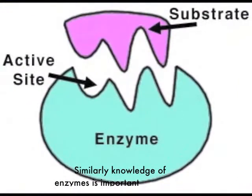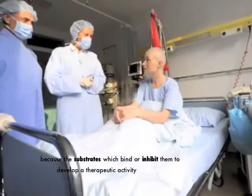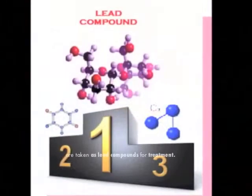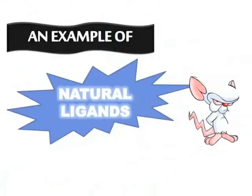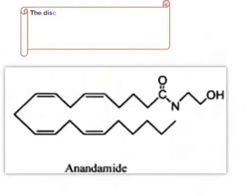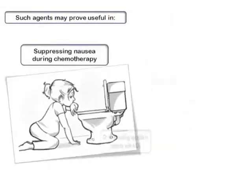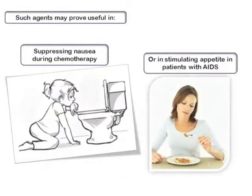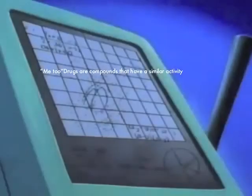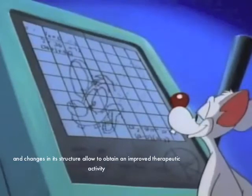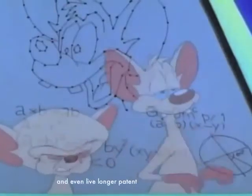Similarly, knowledge of enzymes is important because the substrates which bind or inhibit them to develop a therapeutic activity are taken as lead compounds for treatment. Me-too drugs are compounds that have similar activity, and changes in their structure allow obtaining improved therapeutic activity and even longer patent life.